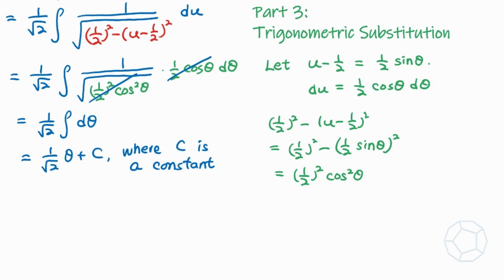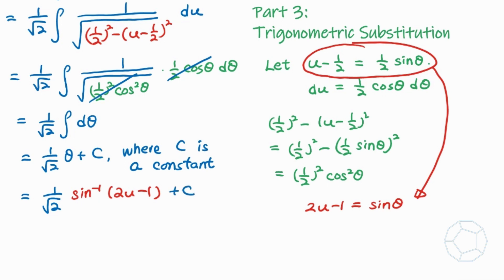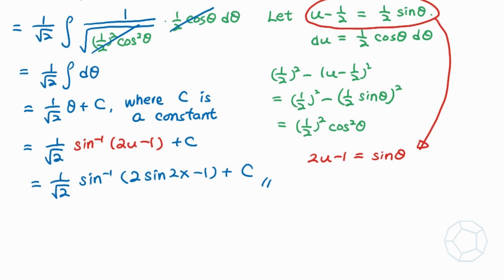Finally, we change theta back to u and then from u to x. From the substitution, multiplying both sides by 2, we have 2u minus 1 equals sine theta, so theta equals arcsin(2u minus 1). The answer is one over square root of 2 times arcsin(2u minus 1) plus C. Substituting back u equals sine 2x, the final answer is one over square root of 2 times arcsin(2 sine 2x minus 1) plus C. We have solved this amazing integral!